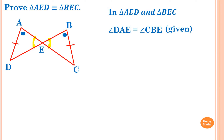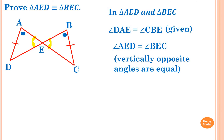The next fact: angle AED is equal to angle BEC — reason: vertically opposite angles are equal. We cannot write 'given' here because it wasn't stated in the diagram; we use our knowledge of the fact that vertically opposite angles are equal. The last fact: AD is equal to BC — reason: given, because the same symbols indicate they are equal.